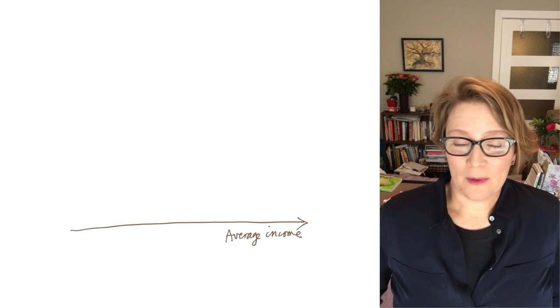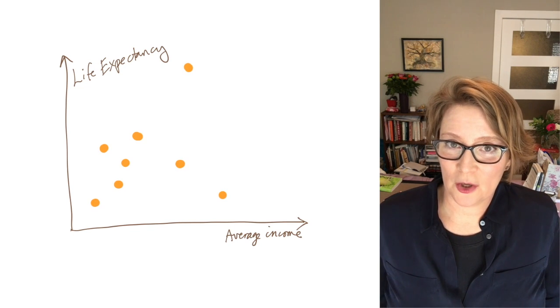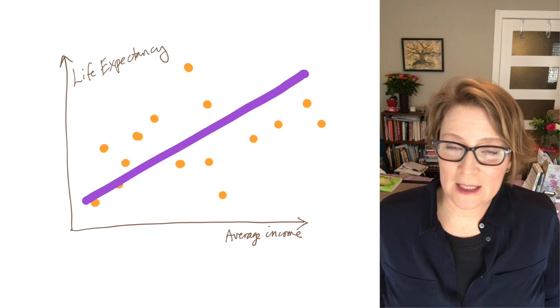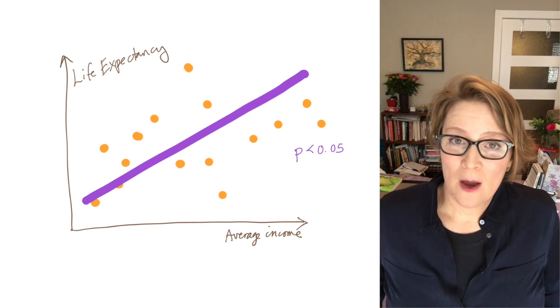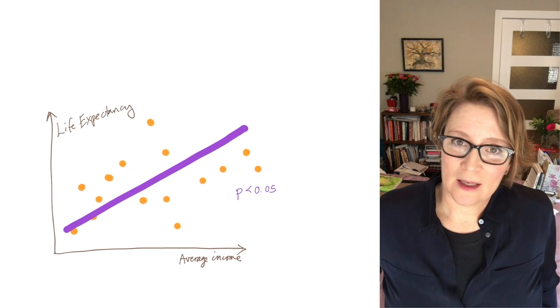...and we keep life expectancy on the vertical axis, we have another plot that shows there's a very strong relationship, statistically significant relationship, between the average income in a country and the average life expectancy in the country.